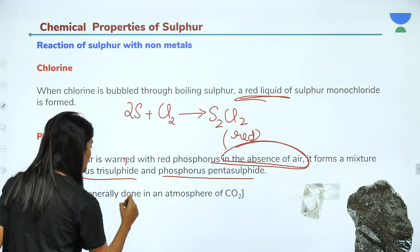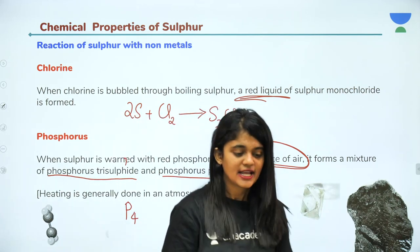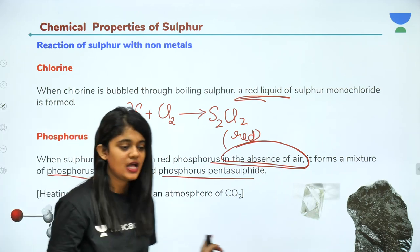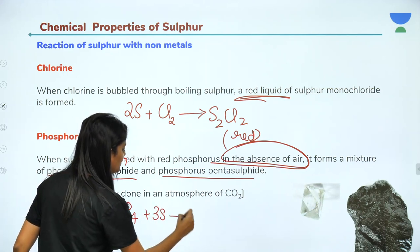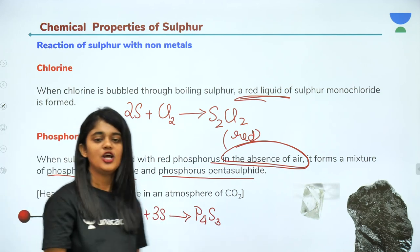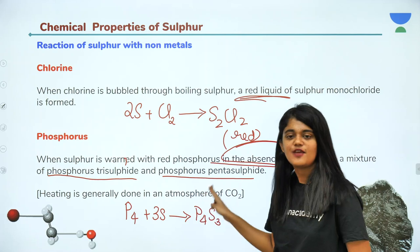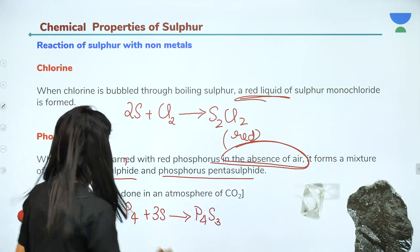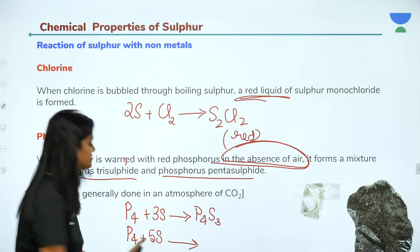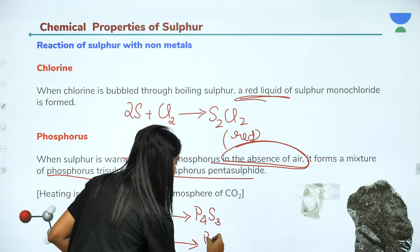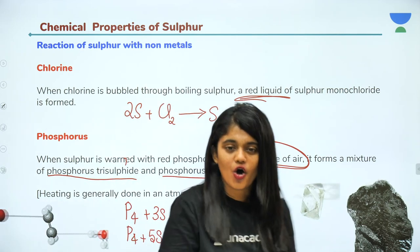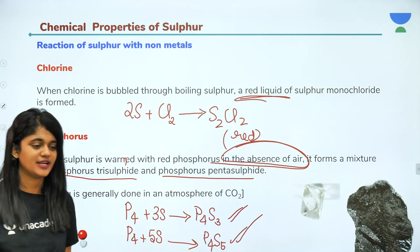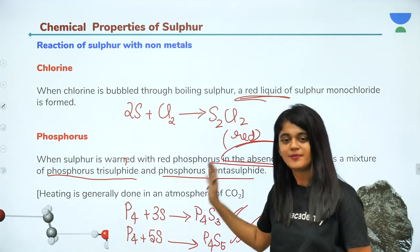Red phosphorus exists in tetra-atomic form as P₄. When P₄ is warmed with sulfur, one product is phosphorus trisulfide, represented as P₄S₃. With 5 moles of sulfur, another product is phosphorus pentasulfide, represented as P₄S₅. So two products are formed: phosphorus trisulfide (P₄S₃) and phosphorus pentasulfide (P₄S₅). This completes the reaction of sulfur with phosphorus.